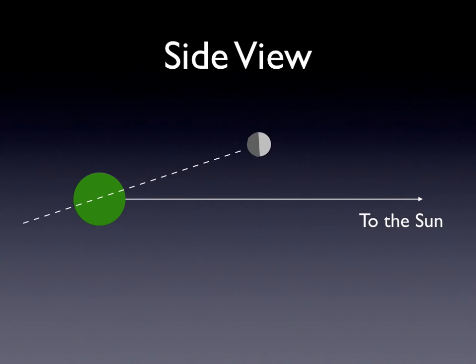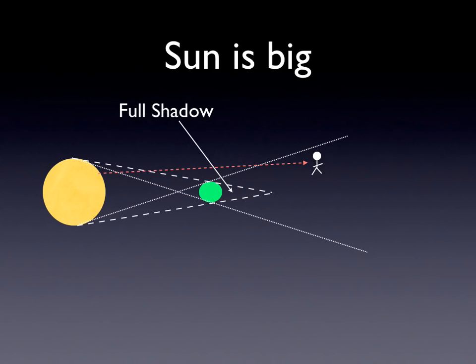But sometimes all three things do line up — and that's when we have an eclipse. There's an important thing to consider: the Sun is big, it's not a point object. We actually have two regions to consider. One region is a full shadow where you can't see the Sun at all — if you trace lines from the top and bottom of the Sun past the edge of the Earth, the region in between those lines receives no sunlight because it's blocked. That's the full shadow.